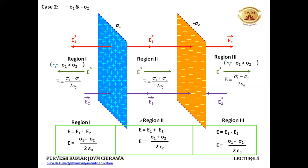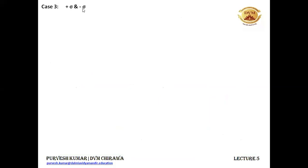Now very quickly we will be doing case 3, which is very easy and very similar to case 2. We have just changed the value of sigma 1 and sigma 2 to the same fixed value sigma. In case 3, one sheet is positively charged having surface charge density sigma, and the other sheet is negatively charged having surface charge density minus sigma.